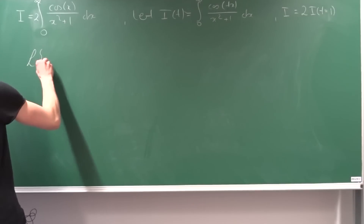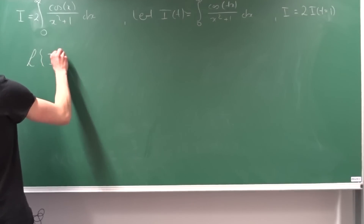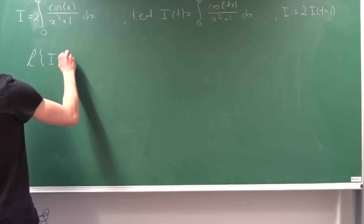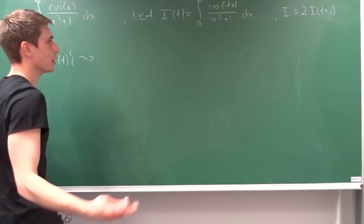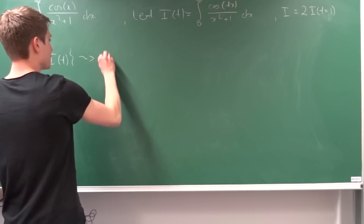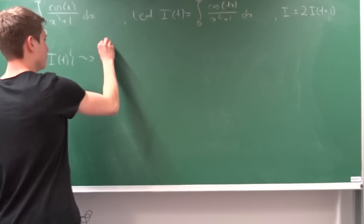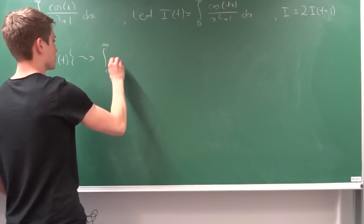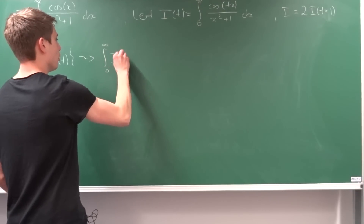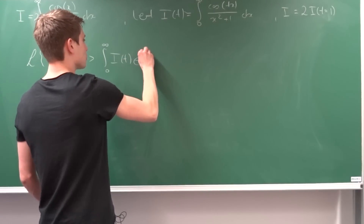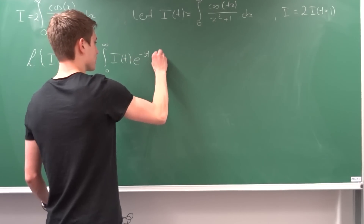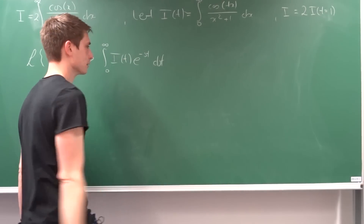So what is the Laplace transform of I in terms of t? Well, we know this is just the improper integral from 0 to infinity of I(t) times e to the minus st, dt.